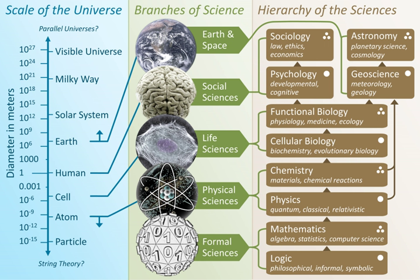Systems theory is the interdisciplinary study of systems in general, with the goal of elucidating principles that can be applied to all types of systems in all fields of research. The term does not yet have a well-established, precise meaning, but systems theory can reasonably be considered a specialization of systems thinking and a generalization of systems science. The term originates from Ludwig von Bertalanffy's general system theory. Self-regulating systems — i.e., those that are self-correcting through feedback — are found in nature, including the physiological systems of our body, in local and global ecosystems, and in climate.